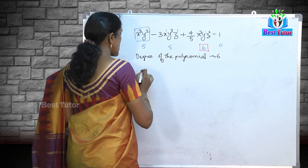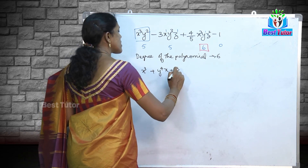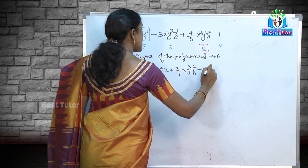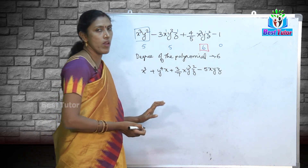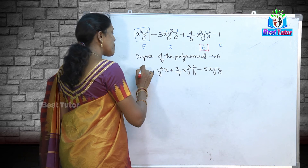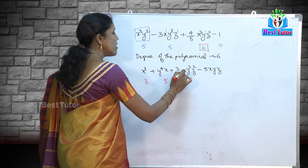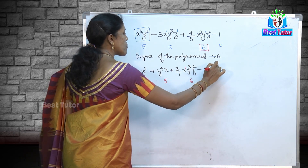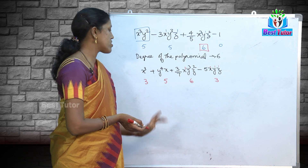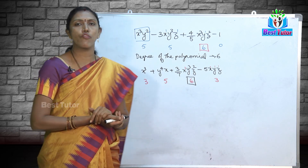Let us consider one more example to make the degree of polynomial concept thorough: x³ + y⁴x + 3/7 xy³z² − 5xyz. This is a polynomial — none of the variables have negative powers. How do we find the degree? We find the power of each term: x³ has power 3; y⁴x has power 4 + 1 = 5; xy³z² has power 1 + 3 + 2 = 6; xyz has power 1 + 1 + 1 = 3. The highest power is 6, so the degree of this polynomial is 6.